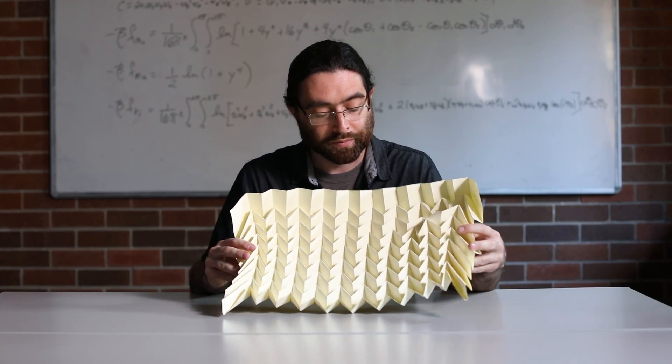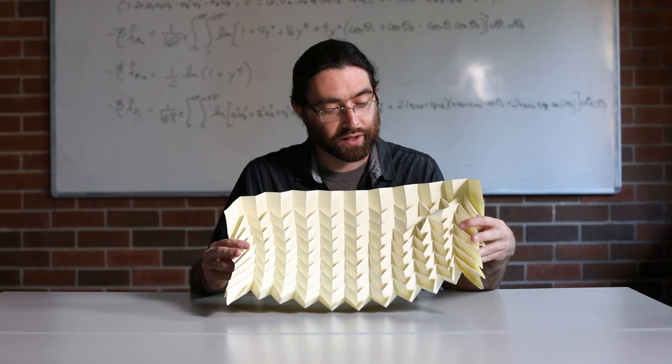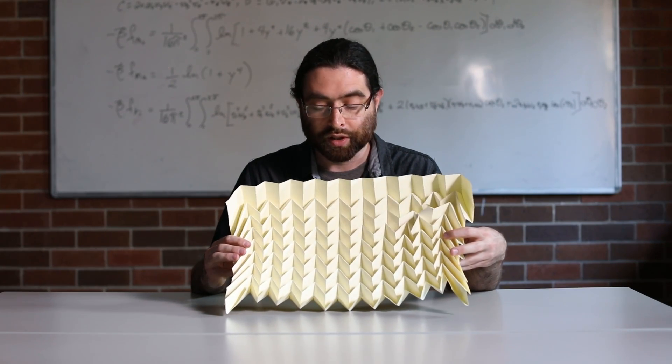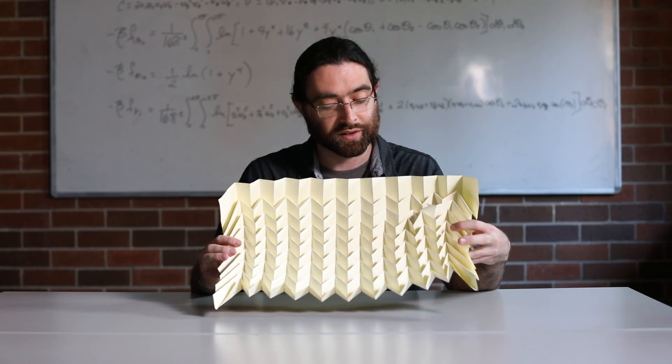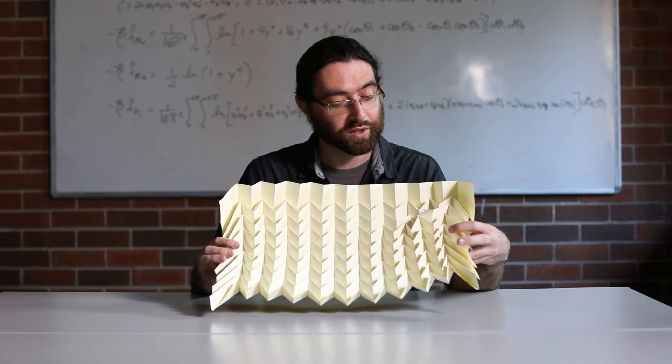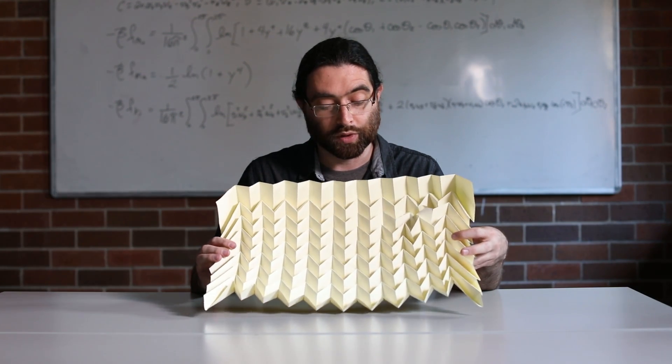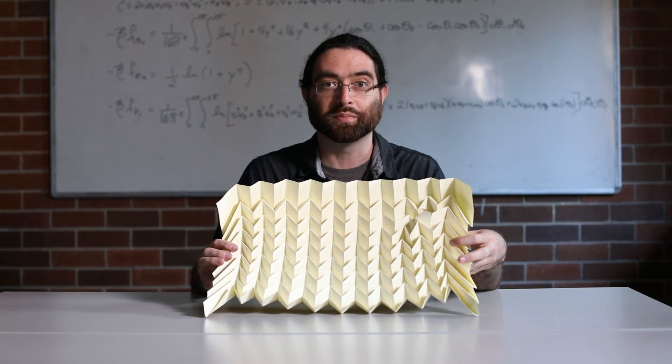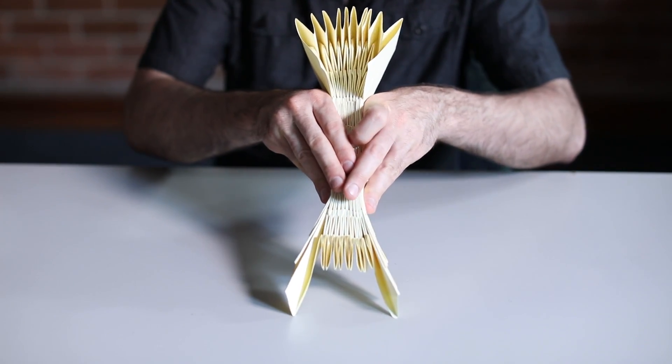It is an example of a negative Poisson ratio material. So there's been some interest in using this as a kind of meta material for which you could tune its properties, in particular its compressibility properties.